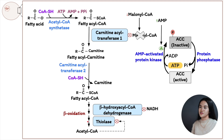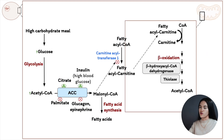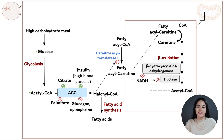Taking both pathways together: malonyl-CoA inhibits carnitine acyl transferase 1; the high NADH/NAD+ ratio inhibits an enzyme in beta-oxidation; and acetyl-CoA inhibits thiolase. In summary, higher glucose levels activate fatty acid synthesis via insulin and citrate activation of ACC, while lower blood glucose activates fatty acid oxidation via glucagon, epinephrine, and AMP-mediated pathways. This is the integrated regulation of fatty acid synthesis and degradation.